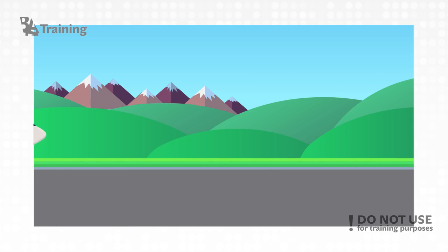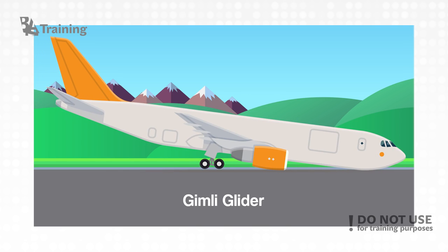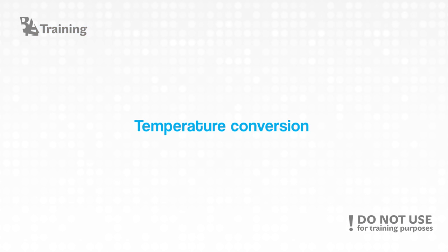One of the most famous incidents, called Gimli Glider involving Boeing 767, happened due to wrong conversions of the units. Gladly there were only a few non-fatal injuries, but it opened up the importance of the ability to easily convert measuring units.